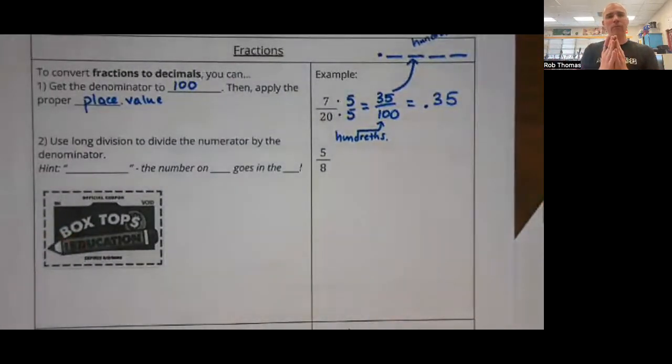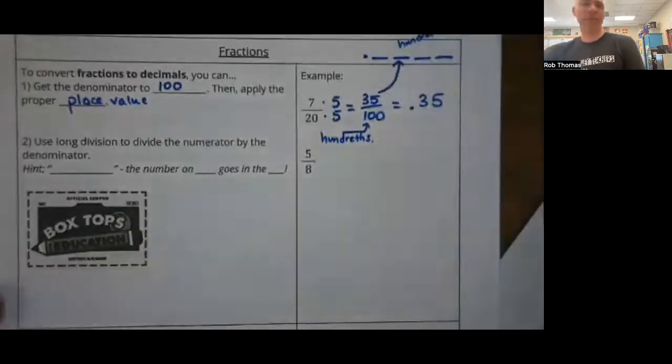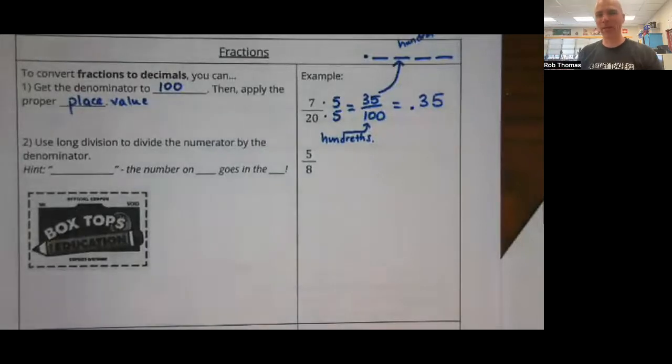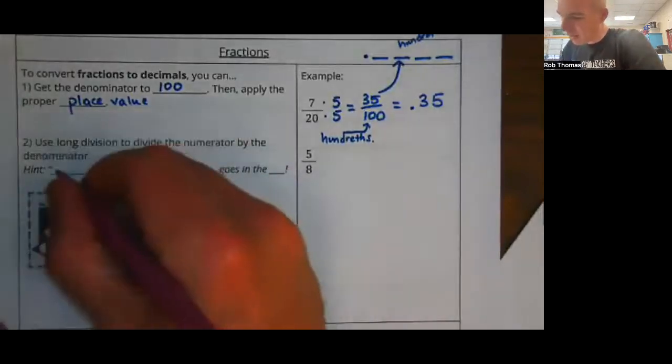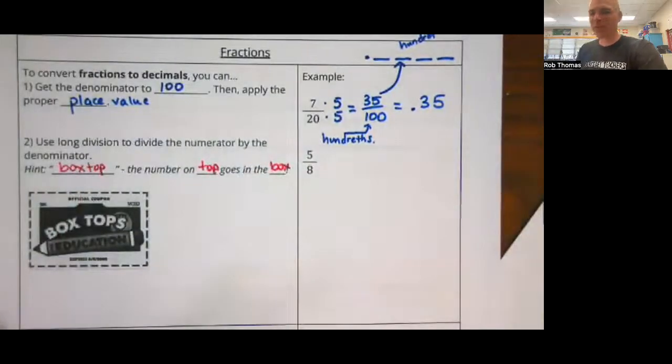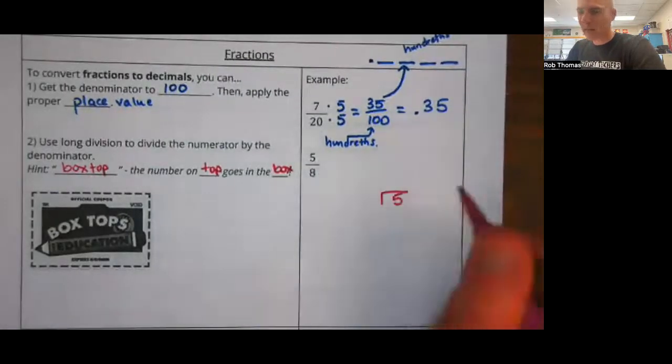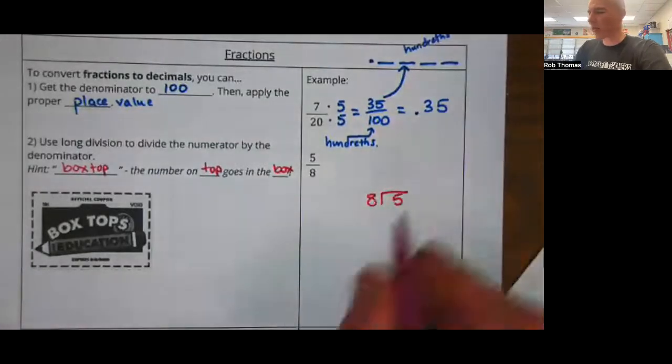So apply the proper place value. Well, the place value is all based on the fact that these are hundredths. Think about your place values - if I put a decimal point here, this first place value or decimal place is the tenths, then you've got the hundredths, then the thousandths and ten thousandths and so forth. We want the hundredths. So what does it mean to put 35 in the hundredths place? It means that the five, the final digit in your number, needs to wind up in the hundredths place. So we write this as a decimal point three five, where the five wound up in the hundredths place. That's the same as thirty-five hundredths.